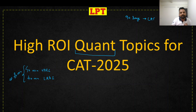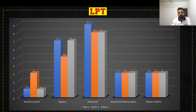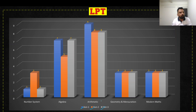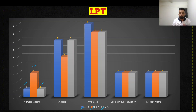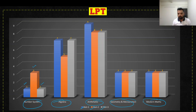Let's start by looking at the CAT 2024 breakup — which section gave how many questions. This graph shows the question distribution across slots. We have topics like number system, algebra, arithmetic, geometry, mensuration, and modern maths. Let's understand where the weightage lies.